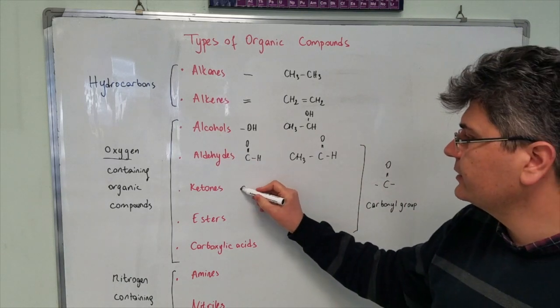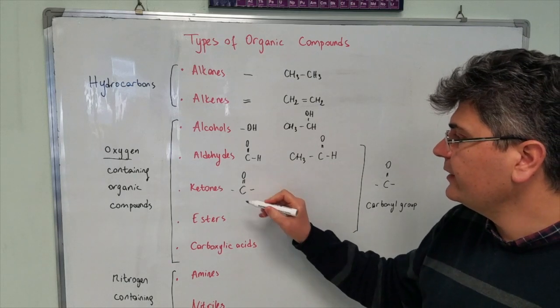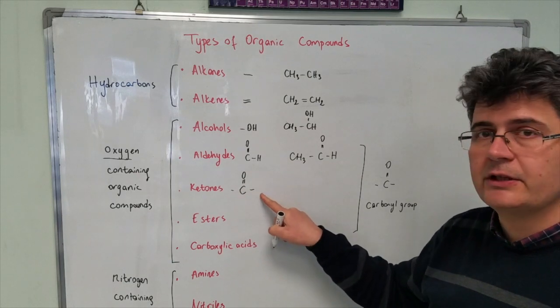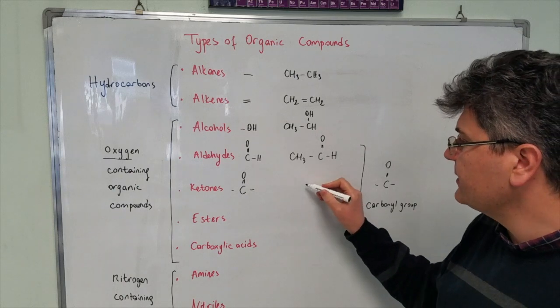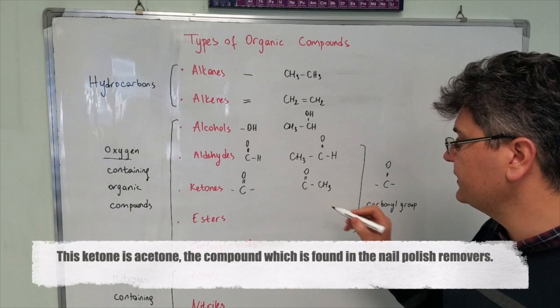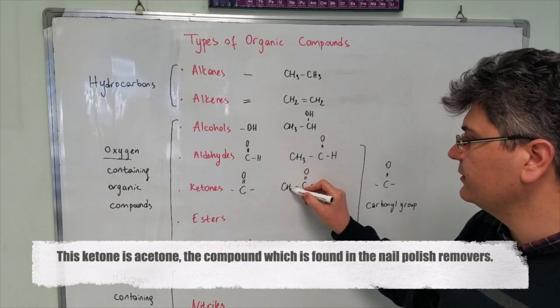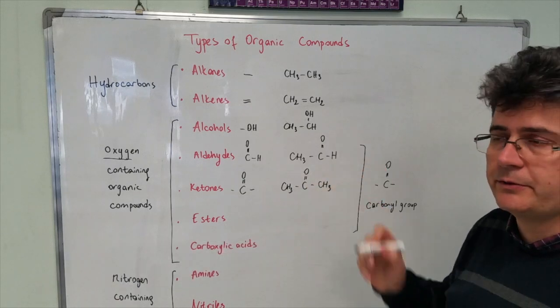Ketones, however, do contain this one. Along with this, we do have two radicals on the left and on the right hand side. Let's make a simple one. For example, I can have a CH3 group in here and I can have another radical like CH3 or C2H5 or whatever you wish.